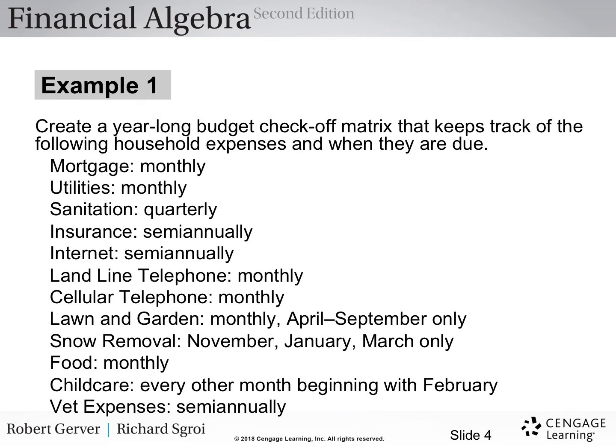So let's look at example one. In this example you're asked to create a year-long budget checkoff matrix. This budget checkoff matrix keeps track of the following household expenses and when they are due. Notice there's different expenses here: mortgage, utilities, sanitation, insurance, and to the right of them is whether they're paid monthly as a mortgage, sanitation is paid quarterly, insurance is paid semi-annually, a landline telephone is monthly, a cellular telephone is monthly. So what we're going to do is take each of these expenses and indicate how frequently they're paid.